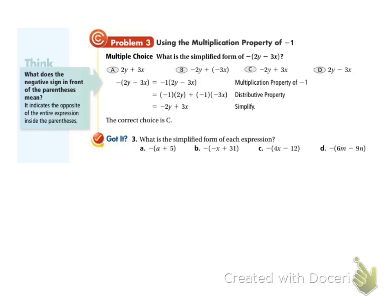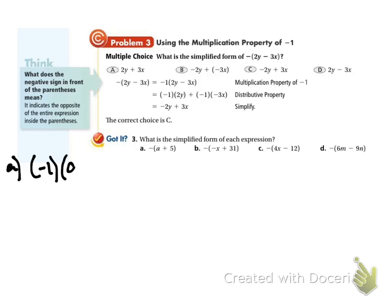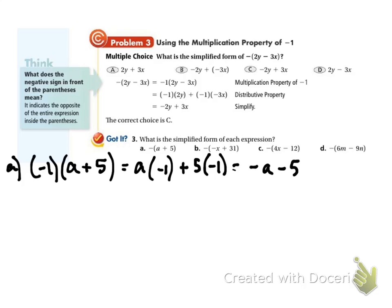If there's a negative out front, we can turn that into a negative 1 and then distribute the negative 1 to everything. So in problem a, I'm going to change that to be a negative 1 out front with (a plus 5), and distribute that negative 1, which turns into negative a minus 5.